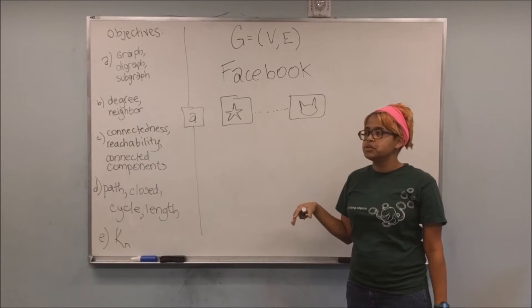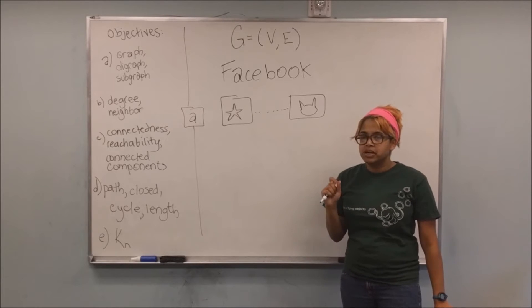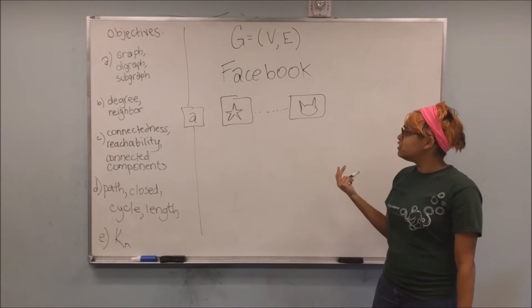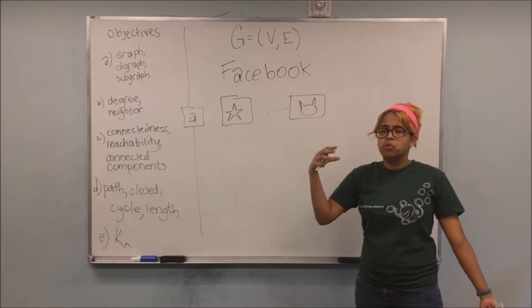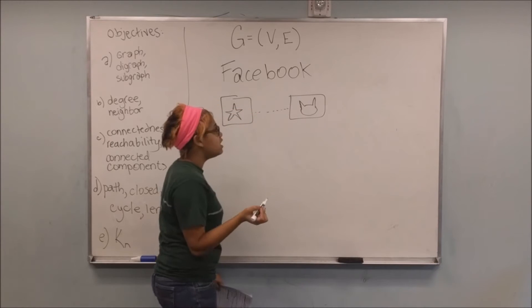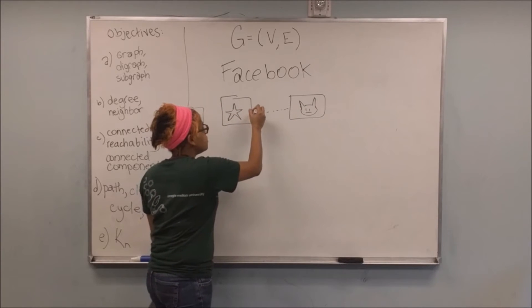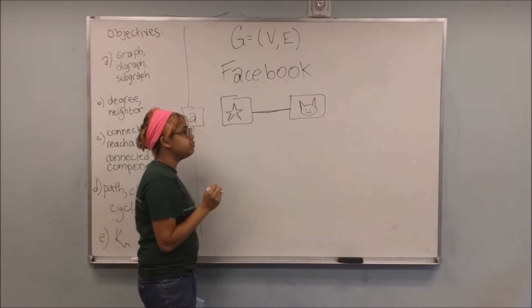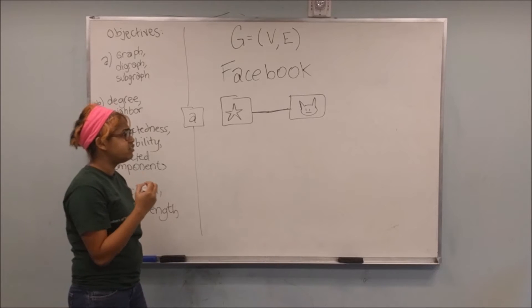and then you see at some point they will have accepted your friend request. Which means that this is kind of a bi-directional thing in that whoever you're friends with is also friends with you. Alright, so when whoever has accepted your friend request, you can think about it as having an edge in between the two of you. Alright, so that's Facebook.